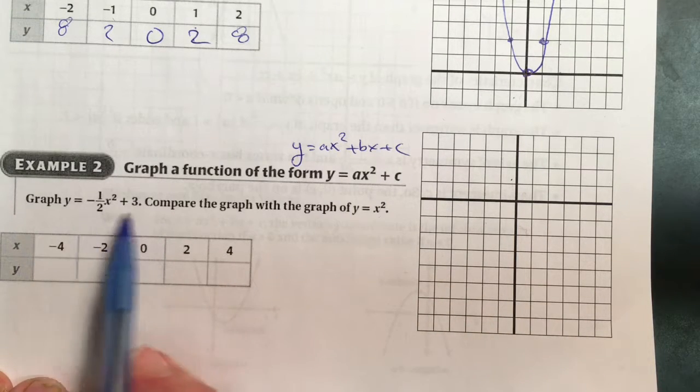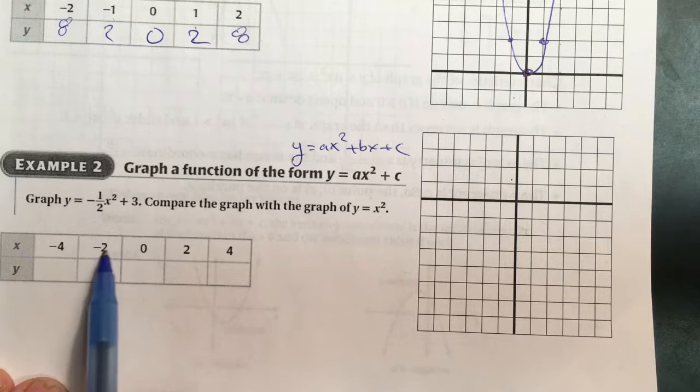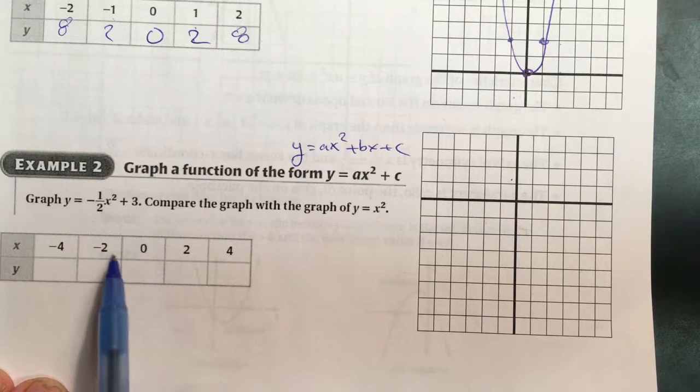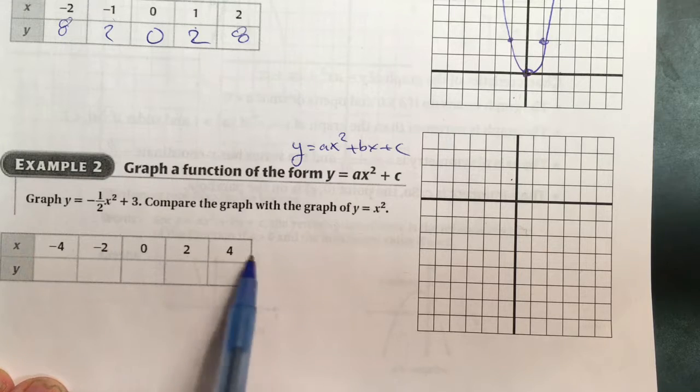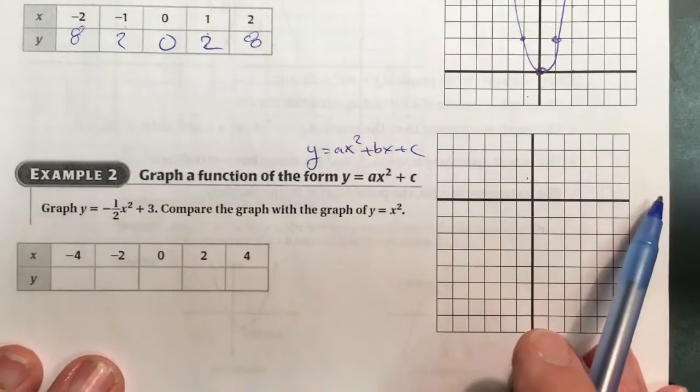Putting the values from the table into the graph. When you have a half, try to use even numbers like 2, 4, 6. If you have a 3, go like 0, 3, 6, 9. Because otherwise you get decimals and fractions. A little tougher to graph those.